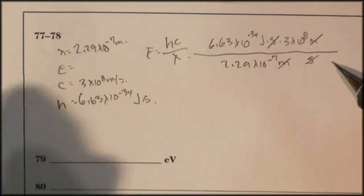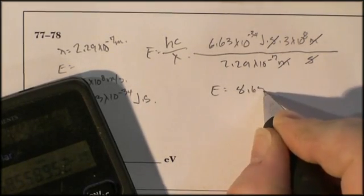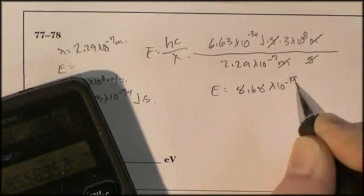Now we get the calculator out. Punch in numbers. 8.68 times 10 to the negative 19 joules.